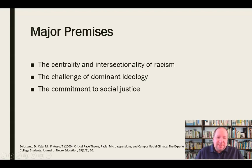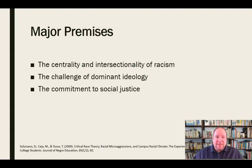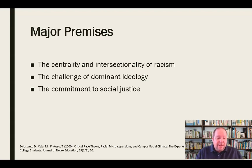Critical race theory also has a commitment to social justice, and it recognizes that oppression is not just limited to race. So critical race theory seeks to extend its efforts of social justice beyond just race — it includes social injustice toward different genders, people of different nationalities and ethnicities, and any group of people that would be oppressed. Critical race theory seeks to end that injustice and has a commitment to social justice for all people.